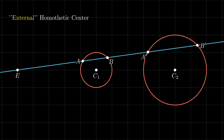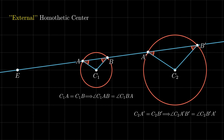If we draw any line through the external homothetic center intersecting the first circle at points a and b, then the same line intersects the second circle at two points a' and b'. Because E acts as the center of scaling, it is easy to see that triangle c2a'b' is just the scaled version of triangle c1ab, and that the corresponding angles are equal.